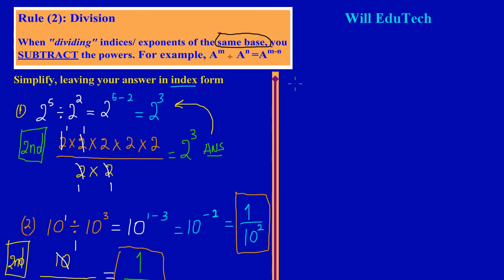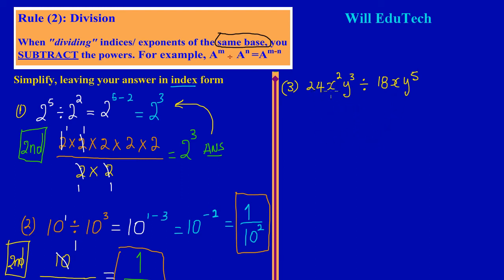Before we go, let's look at the final example. In example number three, let's say we have 24x squared times y cubed, divided by 18x times y to the fifth power. Notice we have common bases: base x divided by base x, and base y cubed divided by base y to the fifth. I'll show you an easy way to look at this.